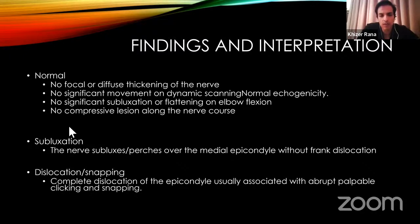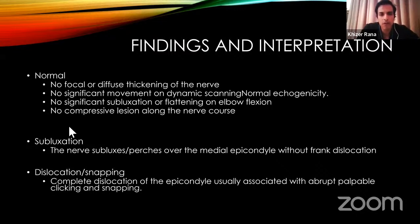Subluxation means the nerve moves more than expected on elbow flexion — partially subluxes but does not frankly dislocate. A dislocating nerve is easy to diagnose: you will hear an abrupt palpable clicking or snapping, and you can actually see the nerve dislocate very suddenly over the medial epicondyle.